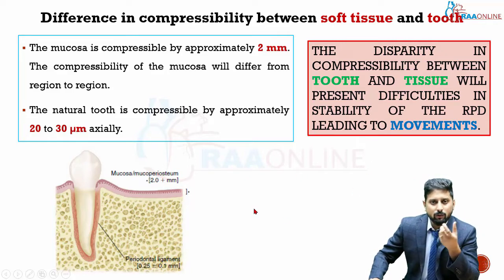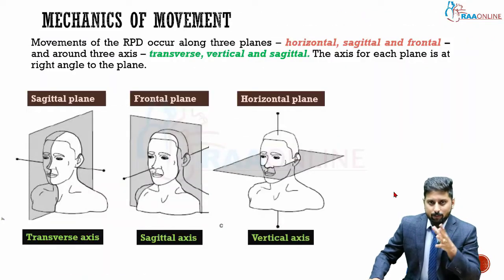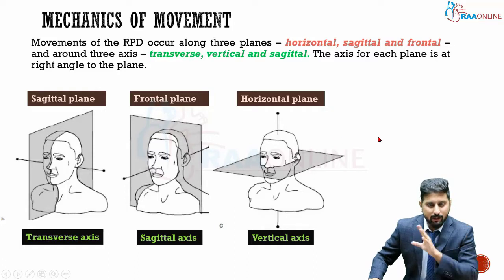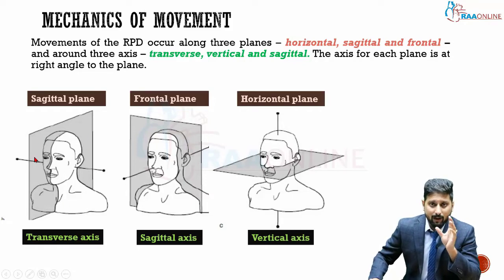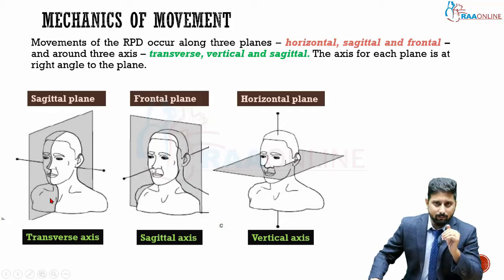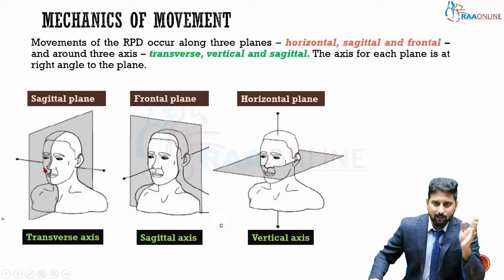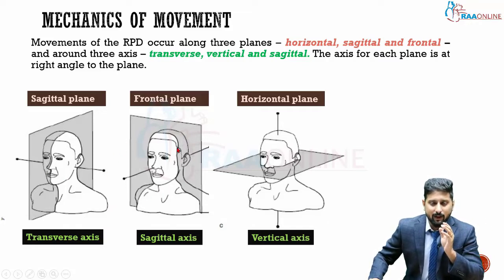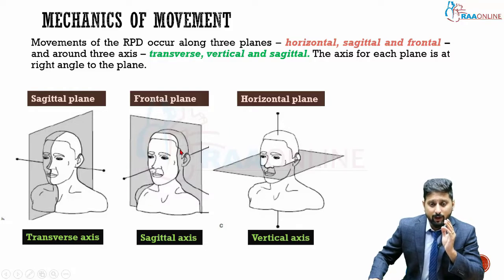These disparities result in movements of the RPD. Any movement of any object can be described using three planes and three axes, since we live in a three-dimensional world. Movements happen along a plane and around an axis. The sagittal plane divides the body into right and left halves; any object moving in the sagittal plane rotates around a transverse or horizontal axis. Movement along the frontal plane — dividing the body into front and back — involves rotation around a sagittal axis.